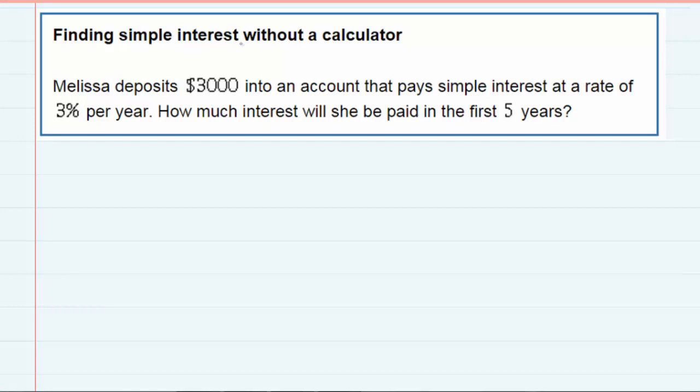Well since this is a simple interest situation, we want to start off by just finding out one year and then we can get that total and multiply it by five because it would be the same each year.